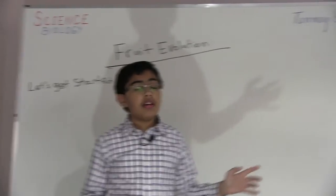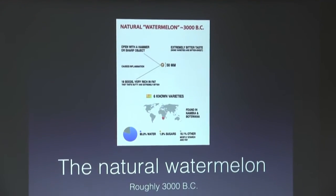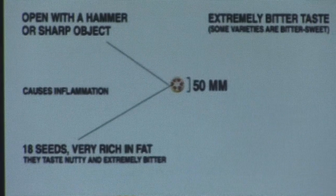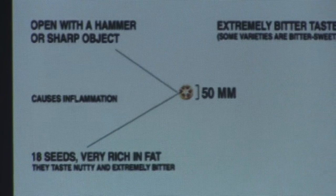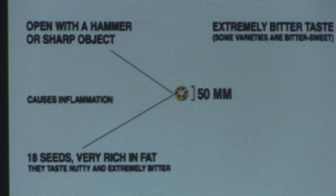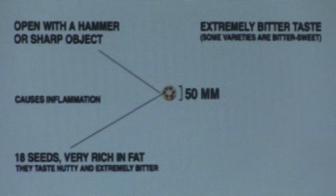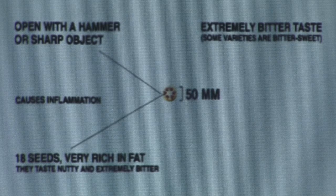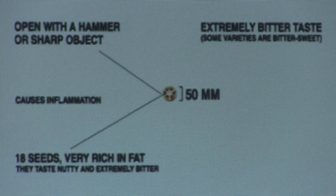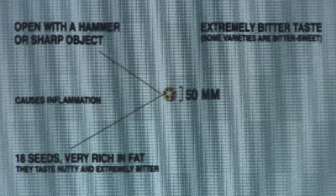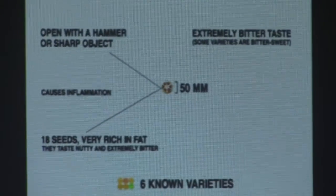Now let's take a look at another example: the watermelon. It doesn't look like a watermelon at all — it's very nutty, around 50 millimeters big. You have to open it with a hammer or a sharp object, just keep hitting it repeatedly. It has an extremely bitter taste — you can sometimes find ones that are bittersweet, but they're always going to be bitter. These actually cause inflammation and are only found in Namibia and Botswana. There are only six known varieties, they're 80% water, 1.9% sugars, and 18% others.